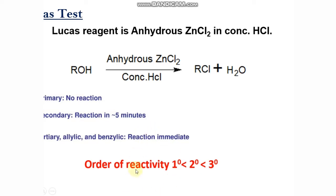So the order of reactivity of different alcohols towards Lucas reagent is: primary alcohol is less reactive than secondary alcohol, and secondary alcohol is less reactive than tertiary alcohol. Tertiary, allylic and benzylic alcohols also react with this Lucas reagent very quickly.